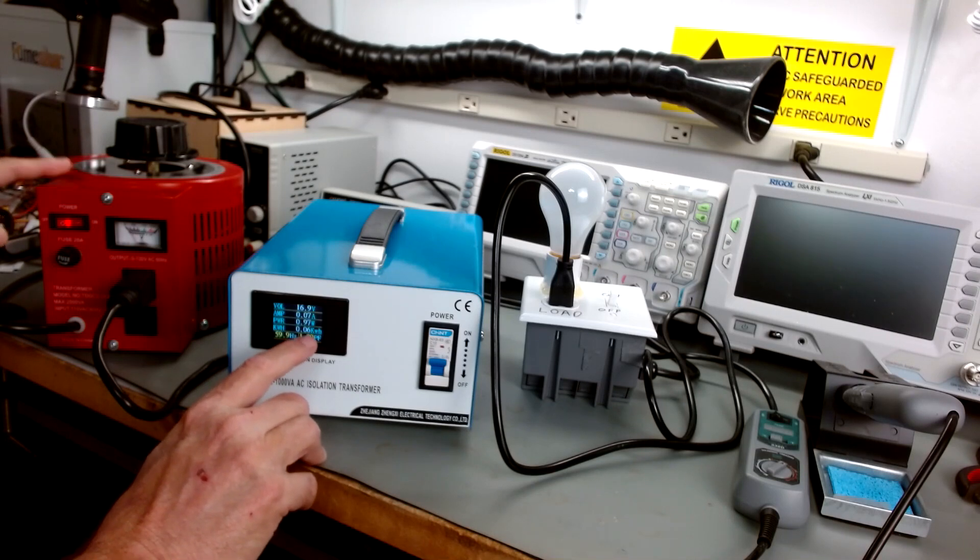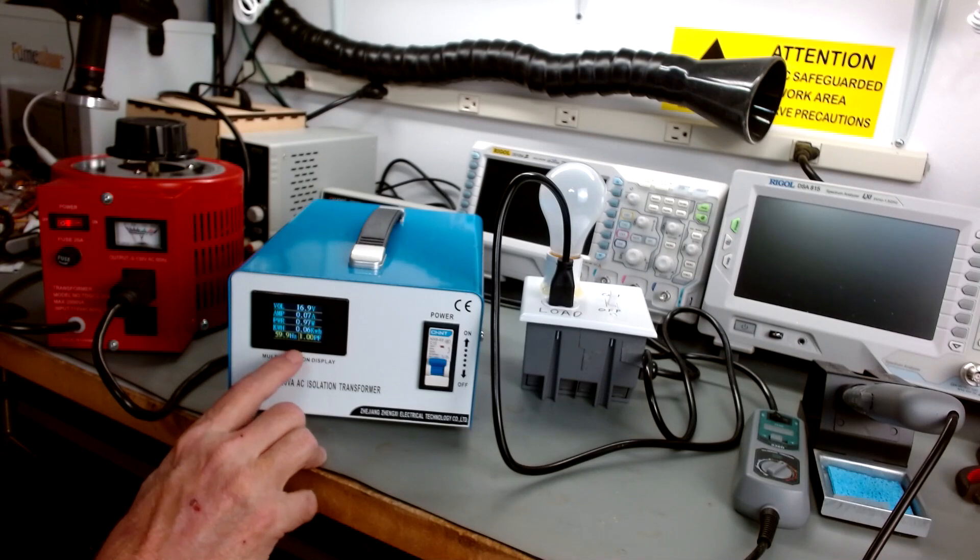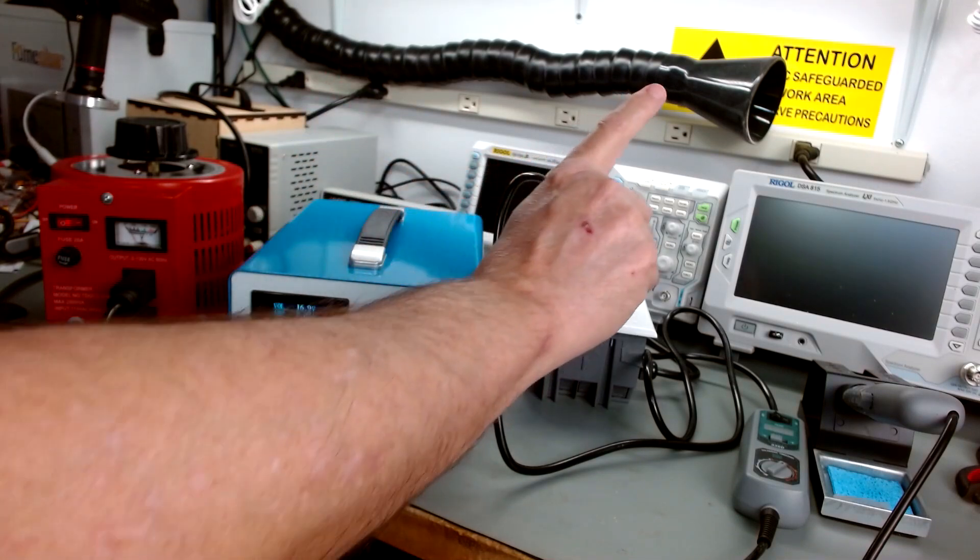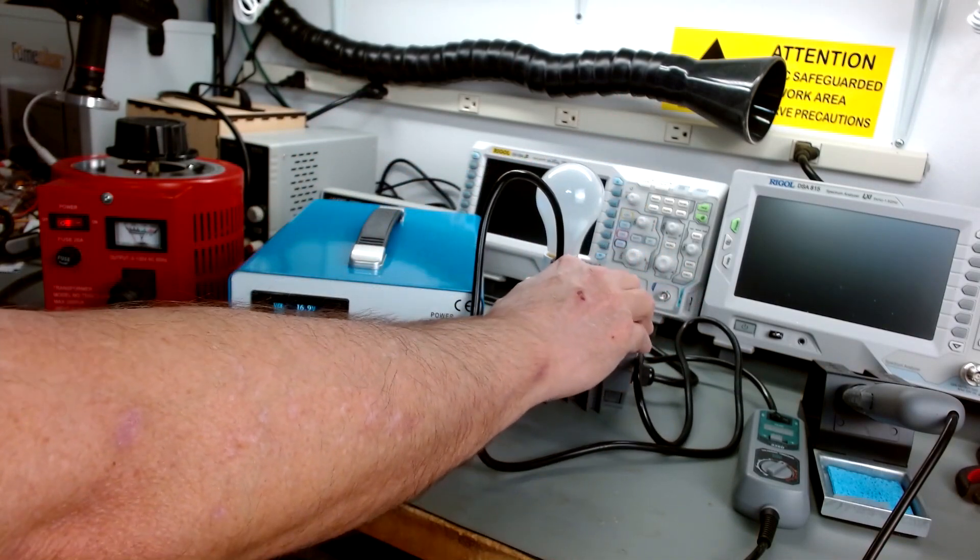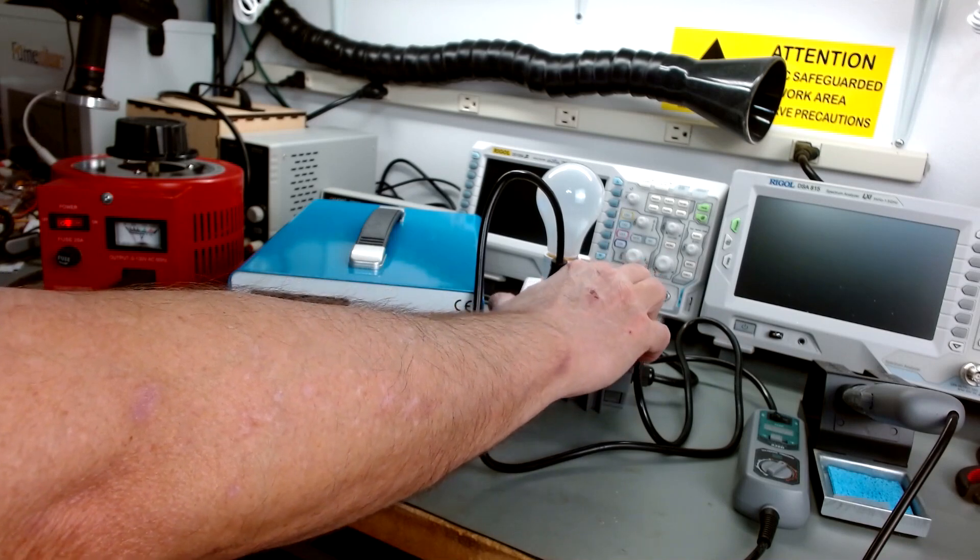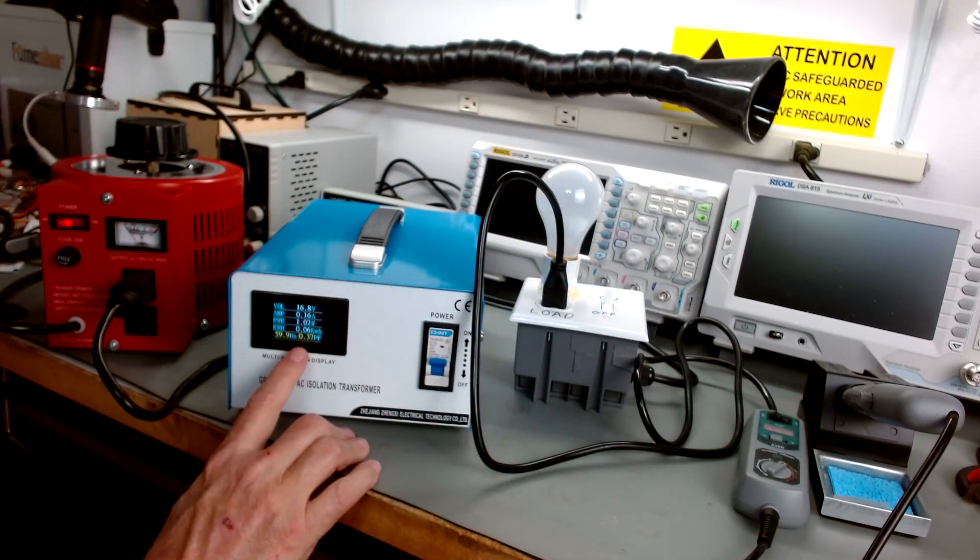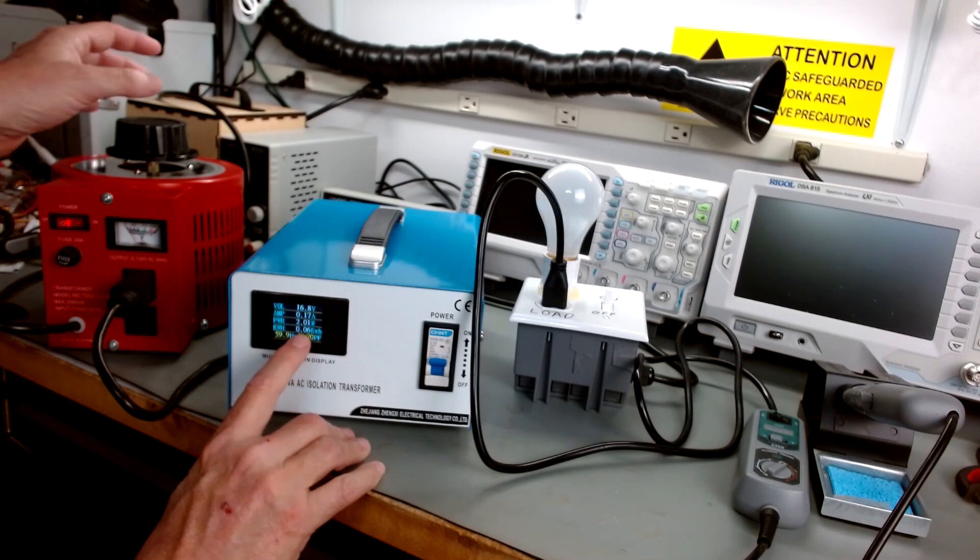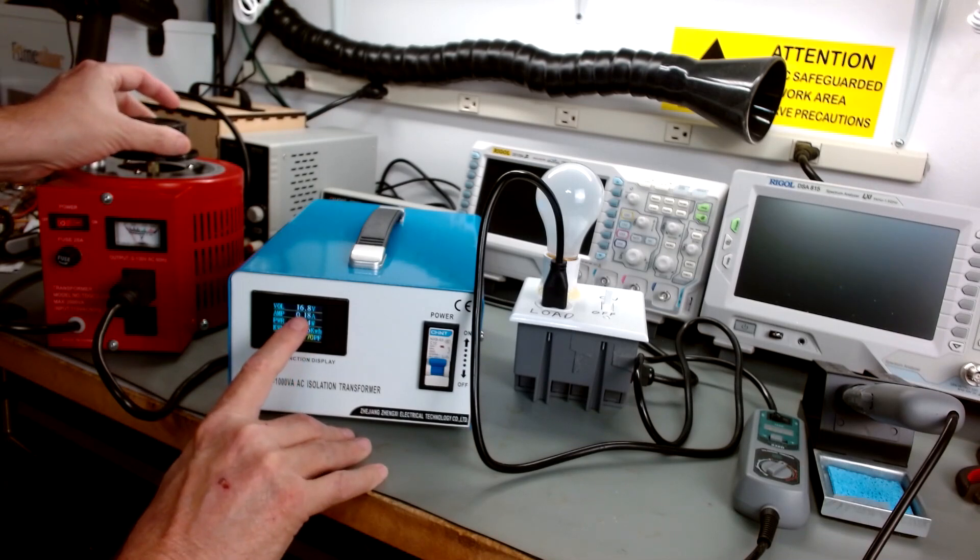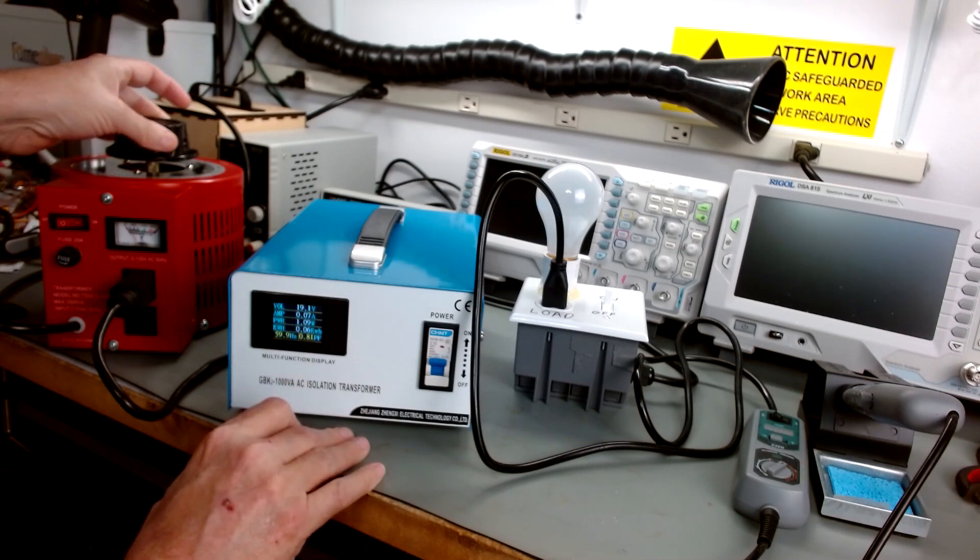This I haven't reset. It says I've pulled 6.06 kilowatt hours through this since I've started using it. I'm getting 59.9 hertz at 1.00 power factor. Now my dim bulb needs to be turned on. So let's turn the dim bulb on. Now you can see we've got an increase in power output. So you can see I'm only getting 17 volts roughly.